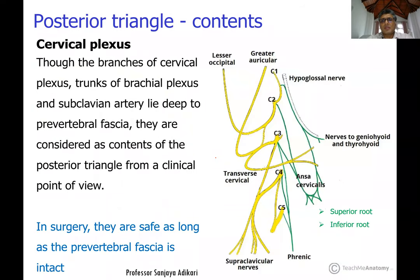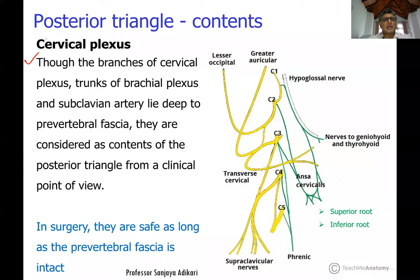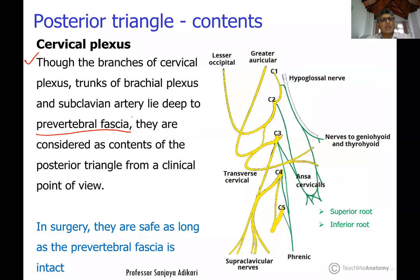An important point about the posterior triangle: the branches of the cervical plexus, the trunks of the brachial plexus, and the subclavian artery with its branches all lie deep to the pre-vertebral fascia. Anatomically they lie behind the posterior triangle since the fascia forms the floor, but clinically they are considered contents of the posterior triangle.